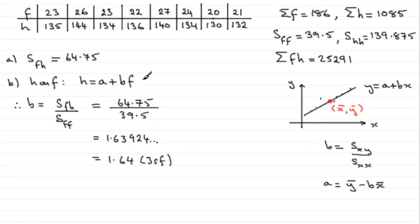Now we need to get A, and we know that according to our formula here, and kind of transforming it over to this one, we know that A must be equal to H-bar, the mean of H, minus B times F-bar, the mean of F. So how do we get H-bar?